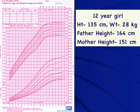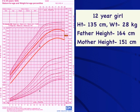Coming back to this example of a 12-year-old girl whose height is 135 centimeters and weight is 28 kg — this girl is short compared to the standard CDC reference. The next step is whether she is short for her family. The father's height is 164 cm and mother's is 151 cm. The mid-parental height comes to around 151 cm, with a standard deviation range of 6 cm, giving a range of 145 to 157 cm. When we draw lines from the lower and upper limits, we see that although she is short compared to the CDC reference, when corrected for the family, she falls in the normal range.